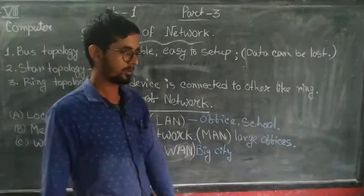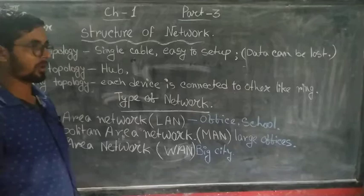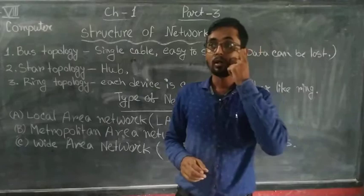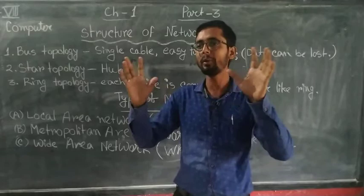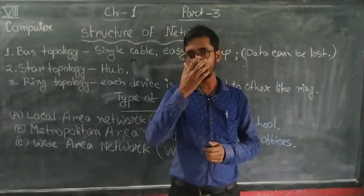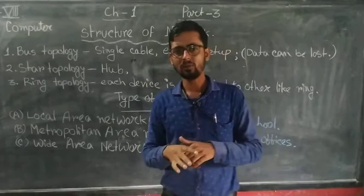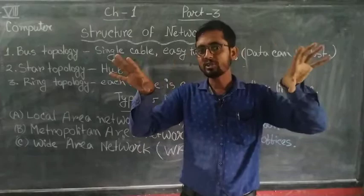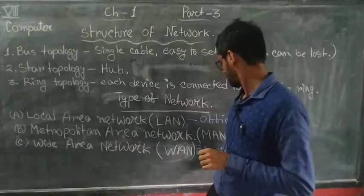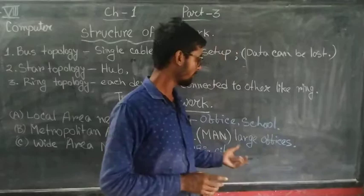The third type is Wide Area Network, or WAN. This is used when a company has many buildings or offices spread across a state. Each district may have an office, and all those offices are connected through cable or satellite — similar to how a cable TV network works. The whole offices are interconnected, and this kind of network is mainly used in big offices.